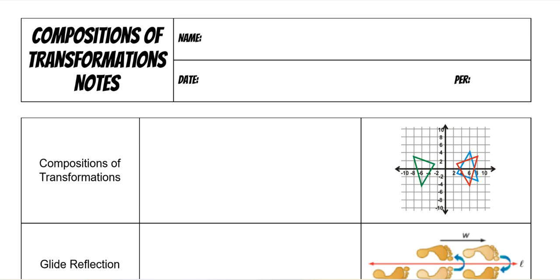We're going to go over compositions of transformations today. In the past you've just been doing one transformation on each object. A composition of transformations means that you are going to be chaining transformations — you will do the second transformation off of the result from the first, not ever going back to the original shape. You're always going to do multiple.